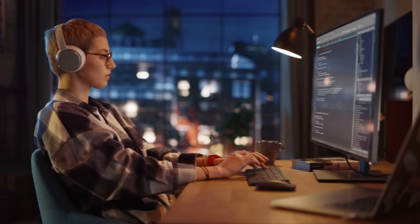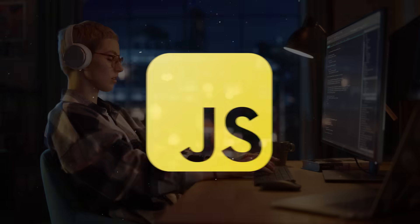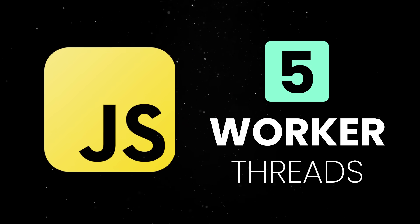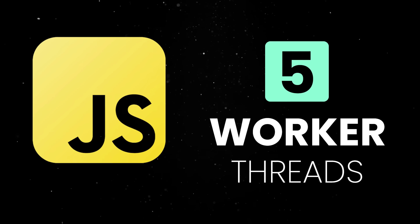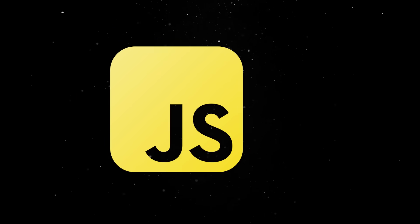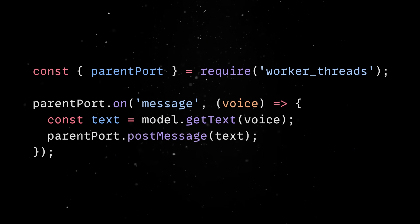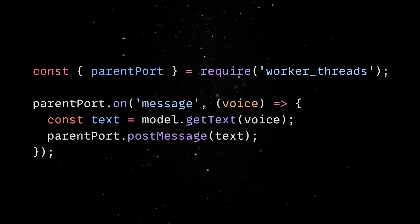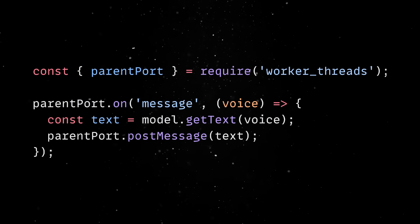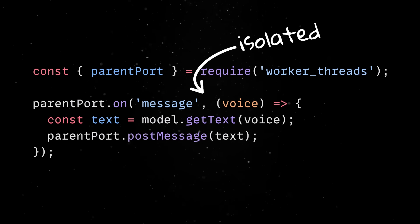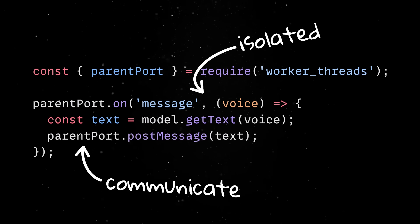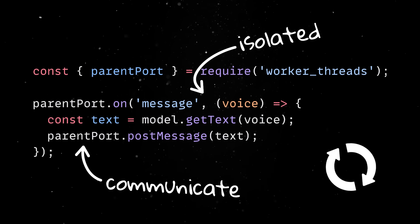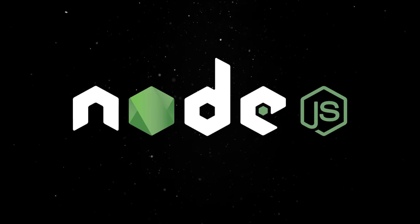These updates go beyond quality of life improvements. JavaScript's single-threaded nature isn't always ideal for CPU-intensive work, and worker threads provide a way to leverage multiple cores effectively while maintaining the simplicity of JavaScript. You can offload heavy computations without freezing your entire application — which used to be one of Node's biggest pain points. You can spin up workers directly in JavaScript, and they will run in isolated threads, communicate through messages, and handle CPU-bound tasks in parallel, all while your main event loop stays responsive.